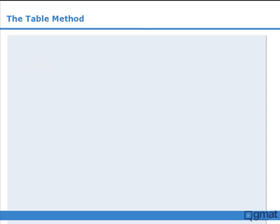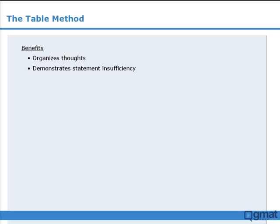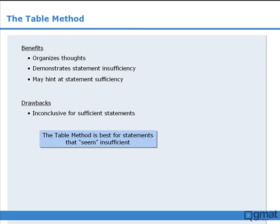So that was the table method. This technique has several benefits: it can help organize your thoughts, it can clearly demonstrate the insufficiency of a statement, and it may hint at the sufficiency of a statement. The primary drawback is that the results are inconclusive for statements that are sufficient. As such, the table method is best applied when you suspect that a statement may be insufficient.